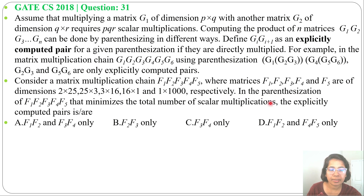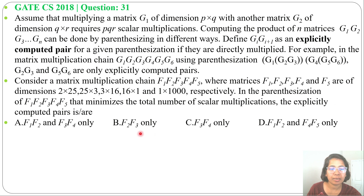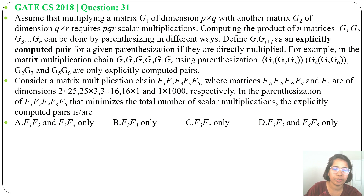In the parenthesization of F1, F2, F3, F4, F5 that minimizes the total number of scalar multiplications, the explicitly computed pair is asked. I will solve this in two ways: one without dynamic programming and one with dynamic programming.